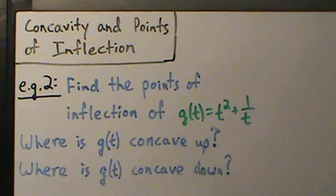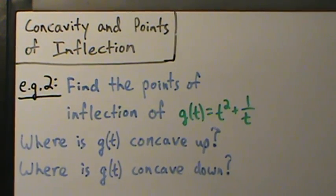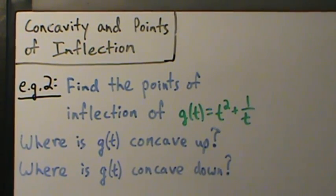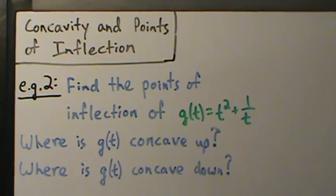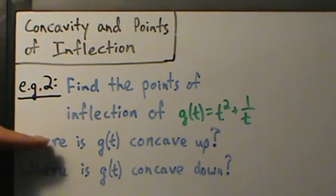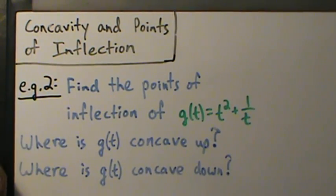Just to outline the process: we're going to figure out where the second derivative is zero and where it's undefined. Use those values to break the real line into intervals, check the sign of the second derivative in each interval. Where the second derivative is positive, g of t is concave up; where it's negative, g of t is concave down.